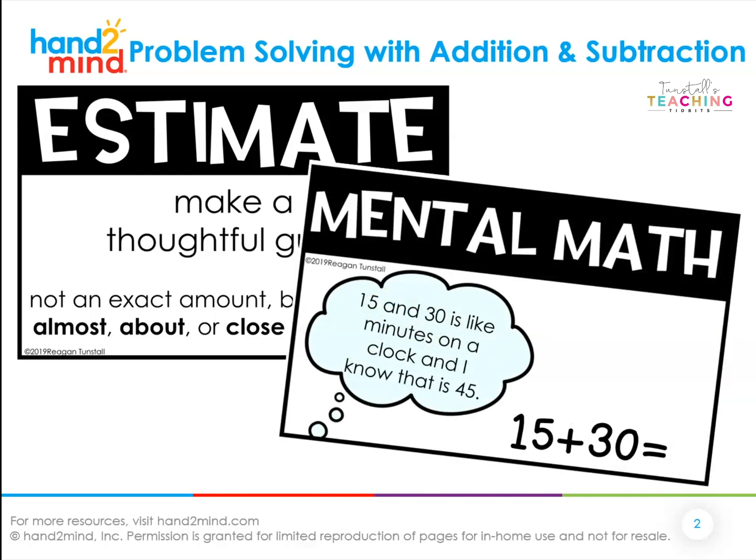Another strategy is mental math — math that you do in your head. Like if my problem was 15 plus 30, I might think to myself: I know a quarter hour is 15 minutes, and if I add that on top of 30 minutes, I know that's 45 minutes. So my brain can tell me, I know 15 and 30 — that's easy, it's 45.